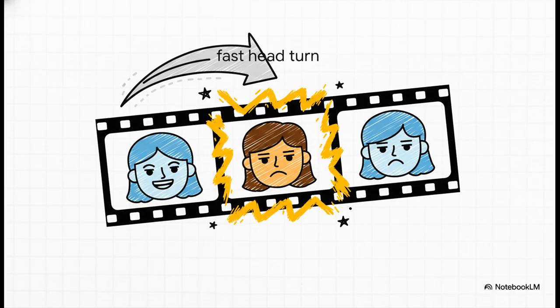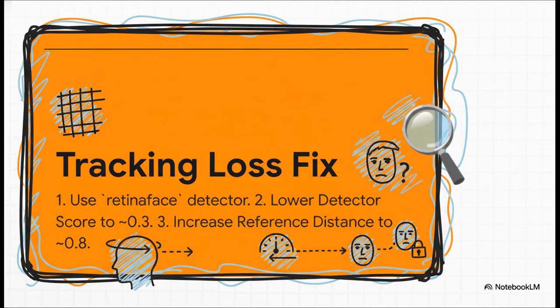The second nightmare: your swap looks perfect, and then during a quick head turn, for just a single frame, the original face flashes through — completely shattering the illusion. That's a tracking failure. Here's the three-part recipe to fix it. First, switch to the more accurate Retina Face detector. Second, lower the detector score — this tells the AI to keep trying to find a face even if it's not 100% sure. Third, increase the reference distance, which makes the AI more tolerant of changes as the face turns away from the camera. Together, these settings force the AI to lock on and never let go.